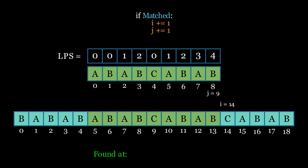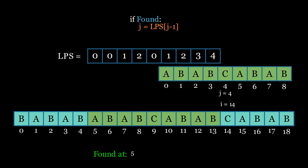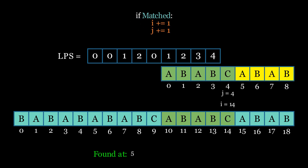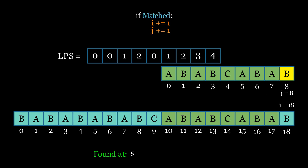If a match is found, we print its index in the text, then update j to the value at index j minus 1 in the LPS array to continue searching for further instances of the pattern. Upon reaching the end of the text, the loop breaks and the algorithm stops.